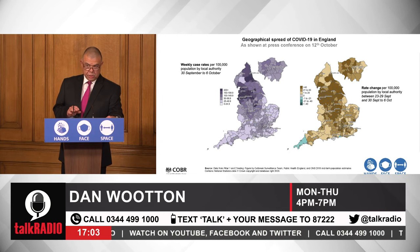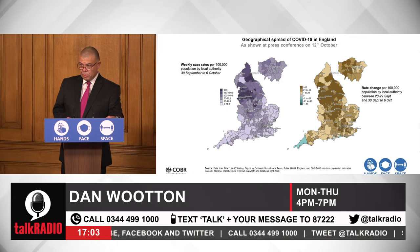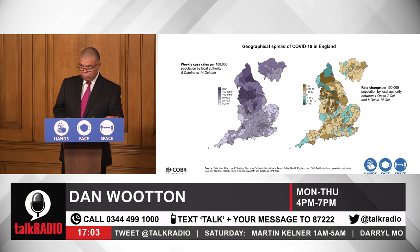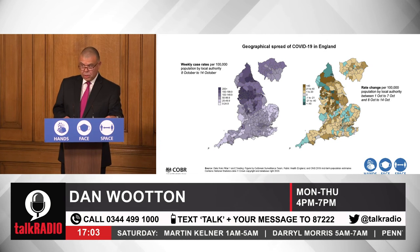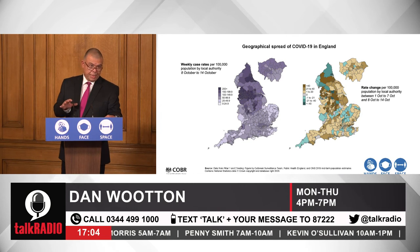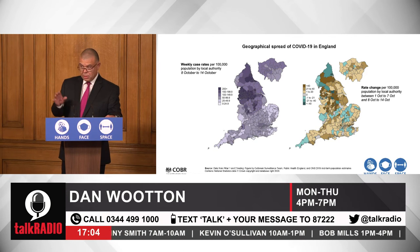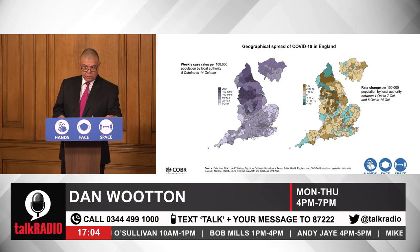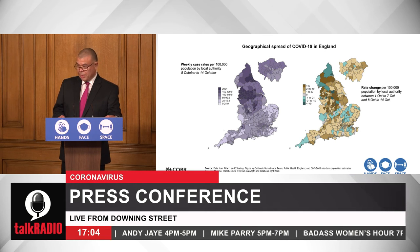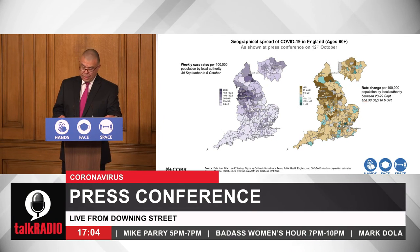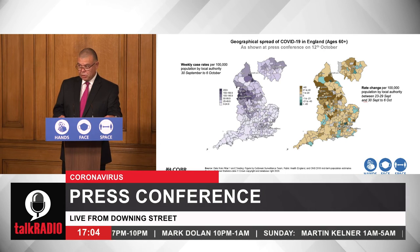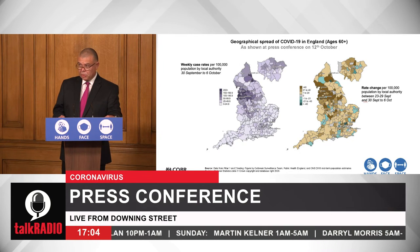Turning to the second slide for the 8th to the 14th of October, you can clearly see that that dark purple confluent problem area has extended from coast to coast and extends quite a long way down the country. In contrast, the rate of change is more variable and there are more patches of green indicating a negative rate of change, as much as there are new patches of dark brown such as in Lincolnshire. There is a similar picture for those aged 60 and above — the purple areas have increased and there are some new areas of increased rate of change in the over-60s.